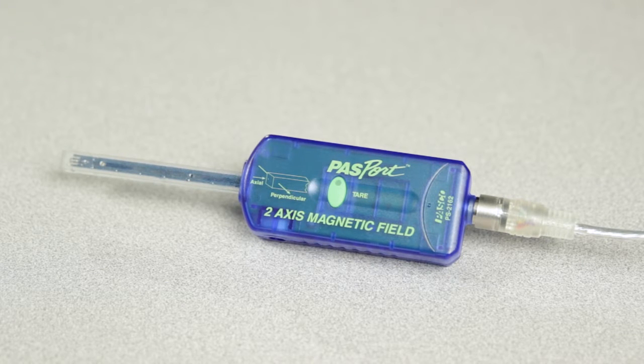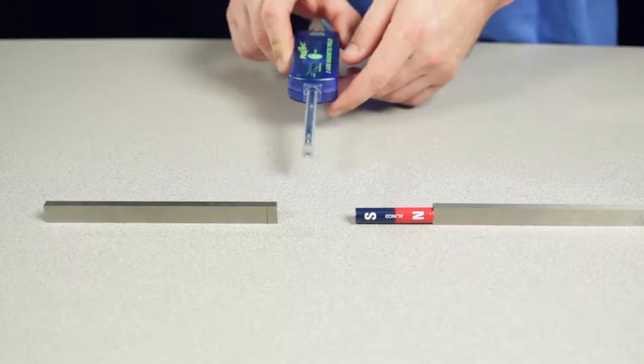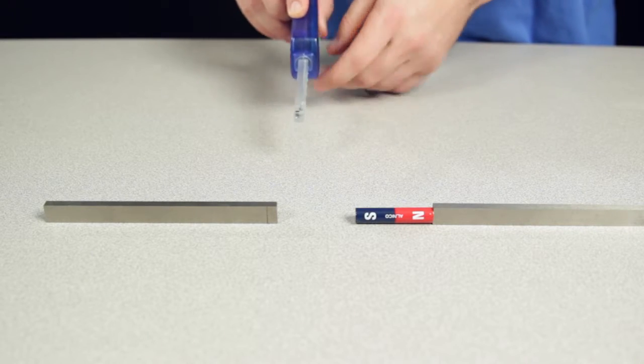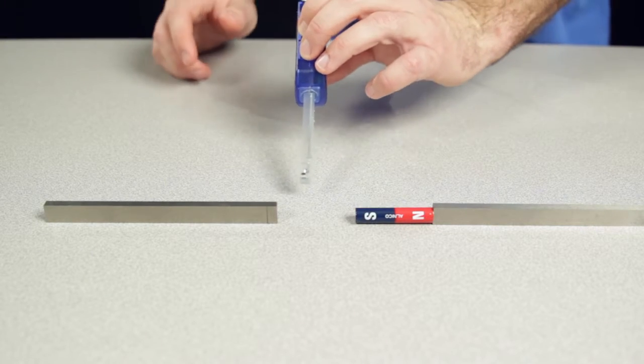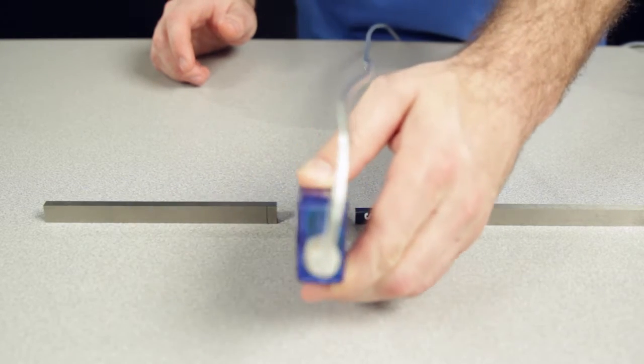The PS2162 two-axis magnetic field sensor is used to measure magnetic field strength simultaneously along two perpendicular axes in the range of plus or minus 1000 Gauss with a resolution of 0.01 Gauss.